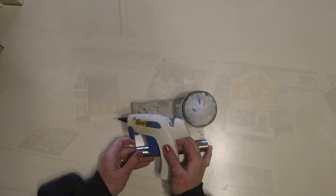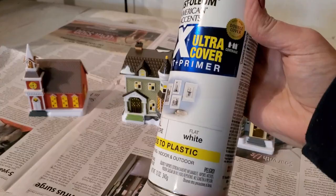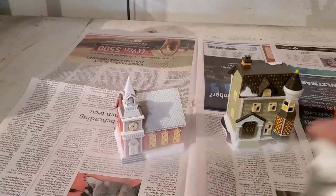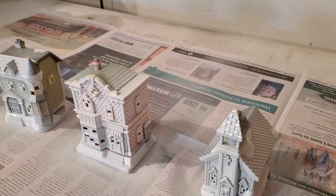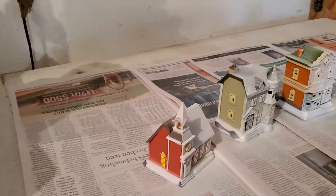First I am going to spray paint my houses with the white spray paint and I am doing several light coats. It actually took me three to four coats of paint to cover all the color and to get in all of the little grooves and everything on the buildings. So this takes a little bit of time because you want to let your paint dry in between each coat.